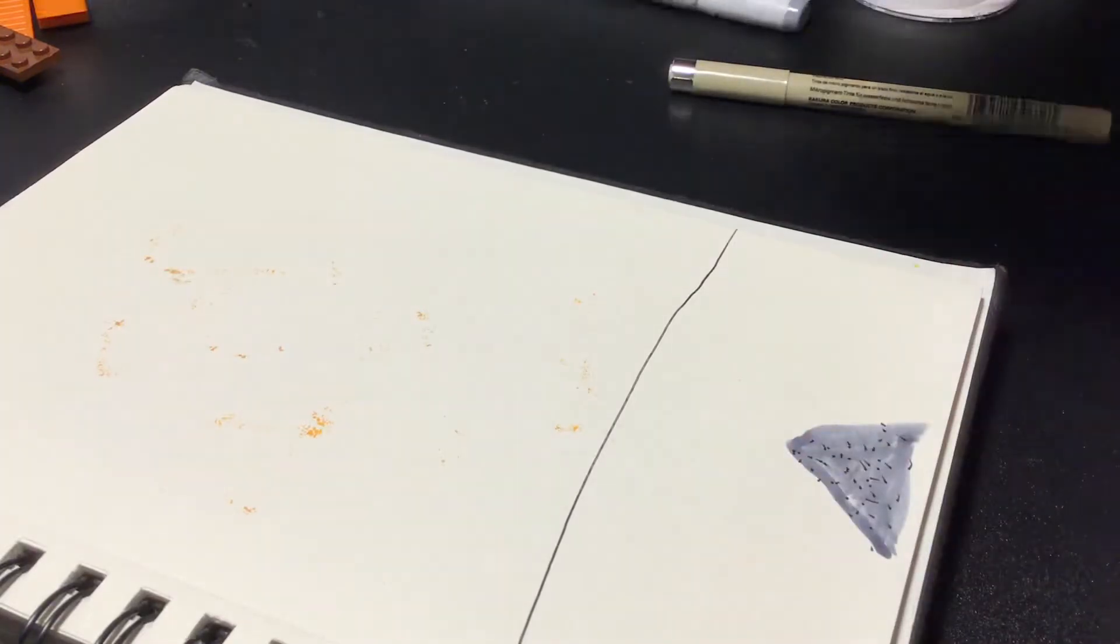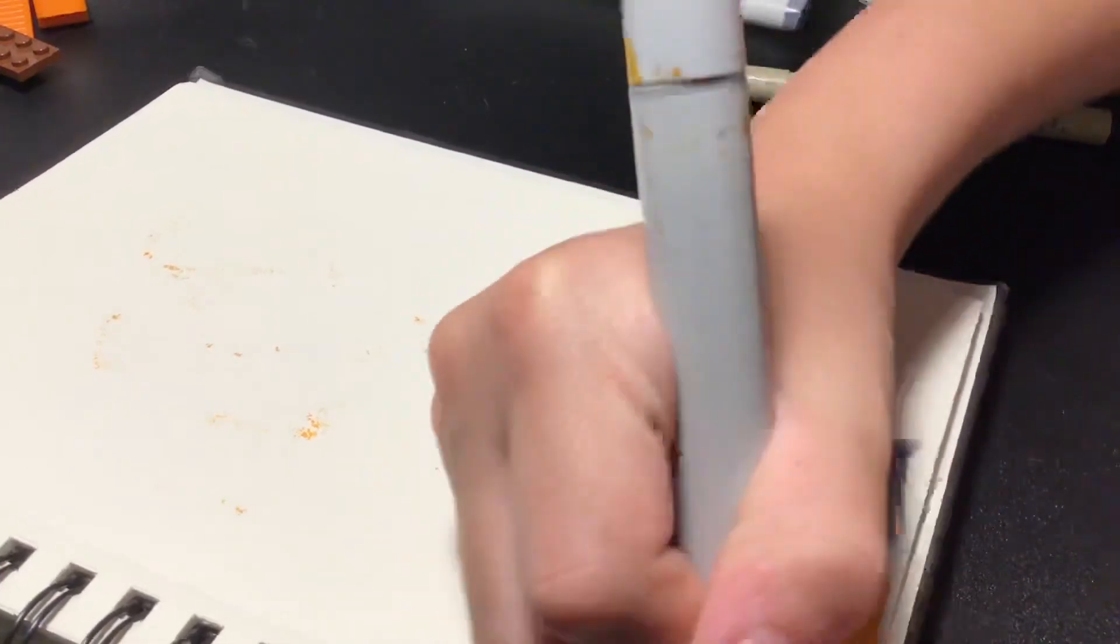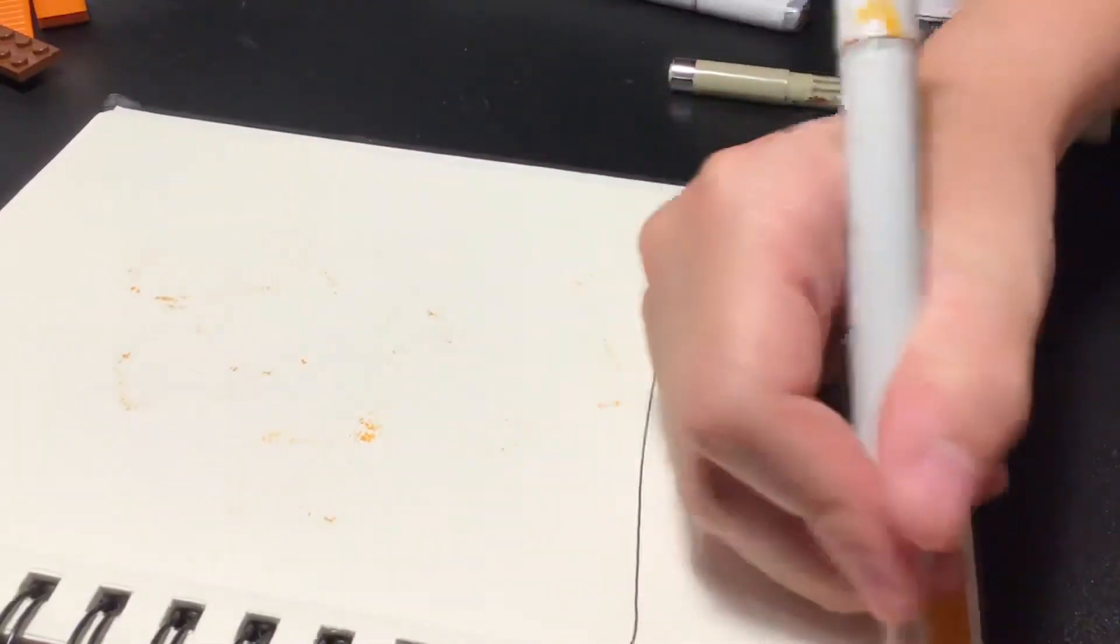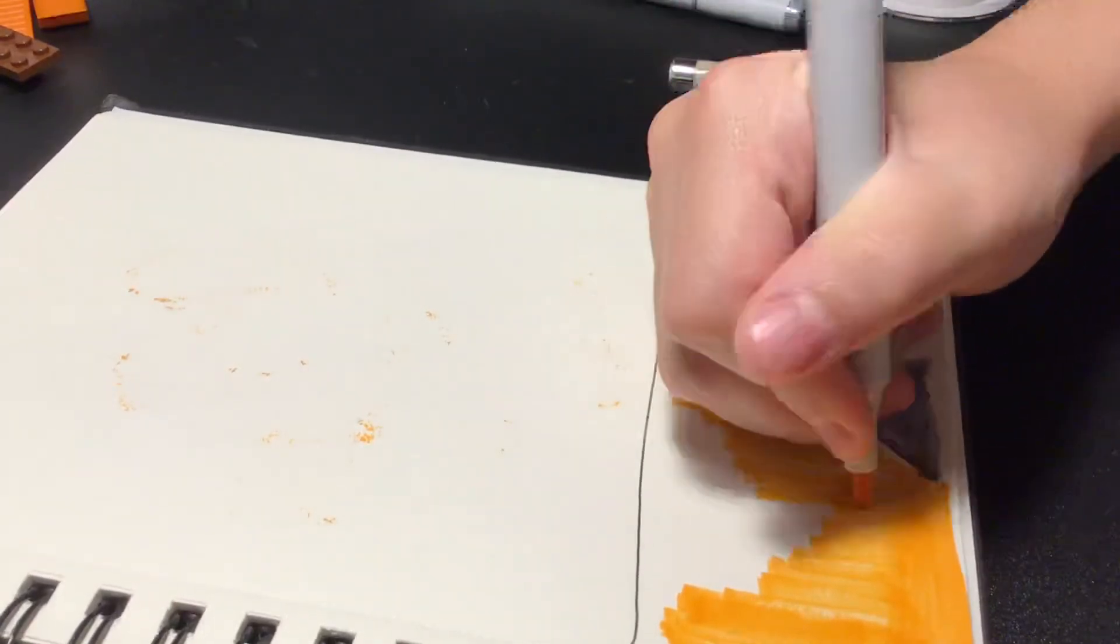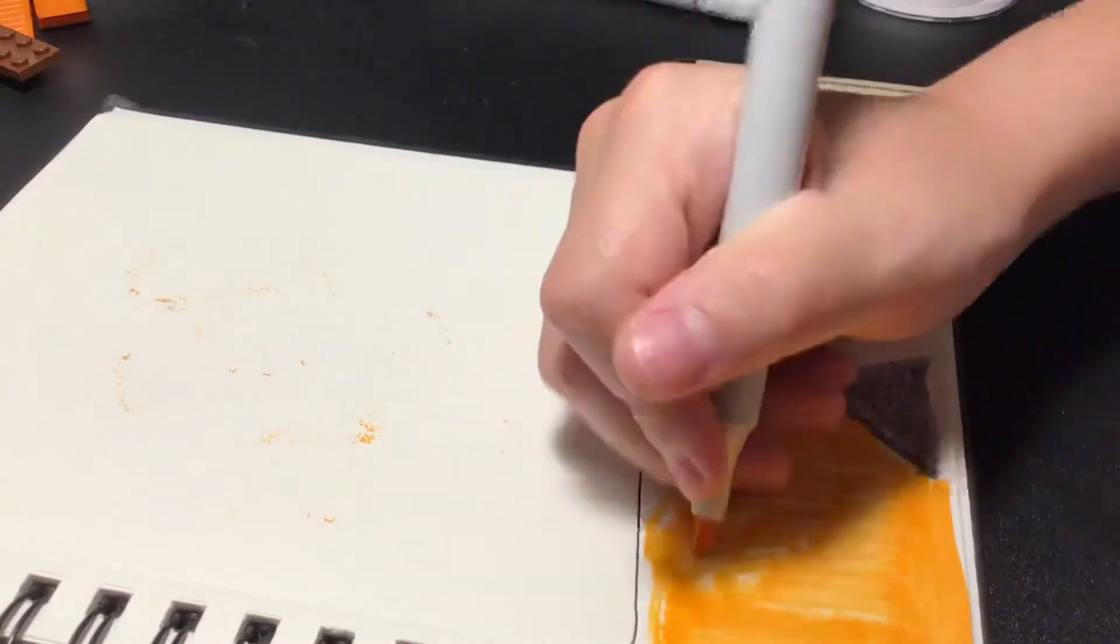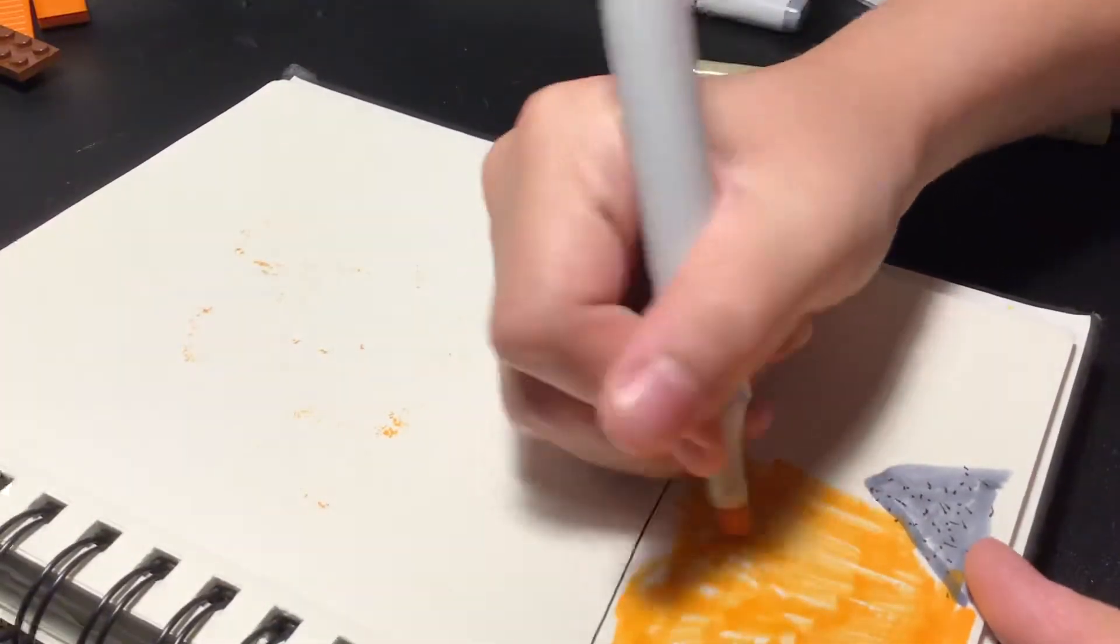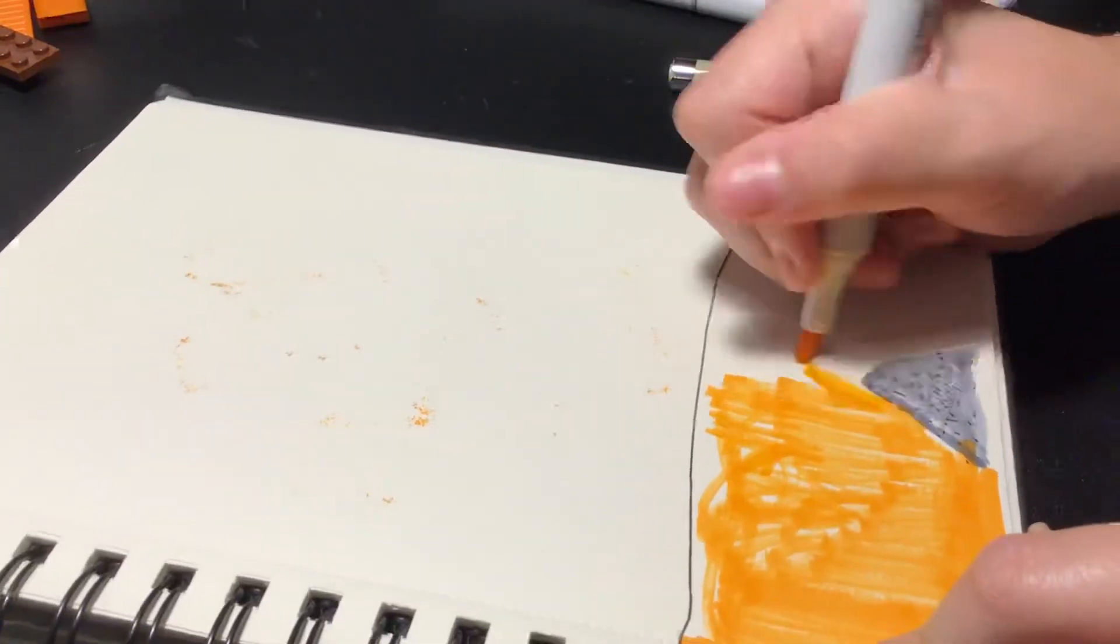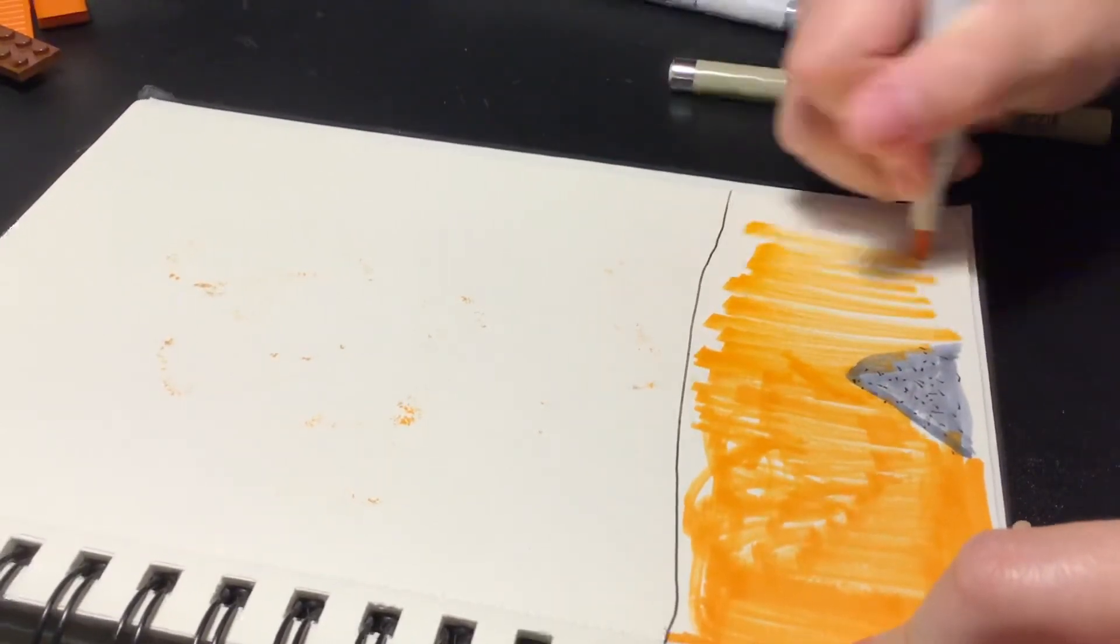We're gonna take this orange marker and just do this. Add in some nice color because reasons and it's epic. Look at that color and color it in like that.